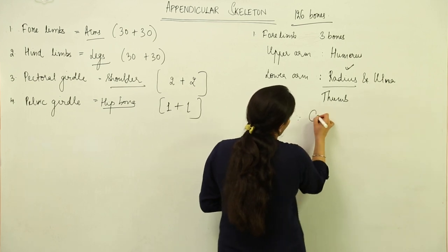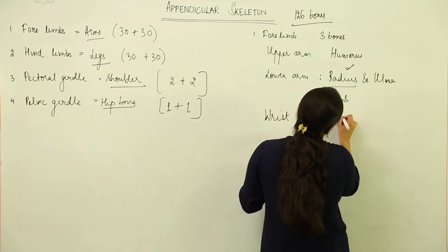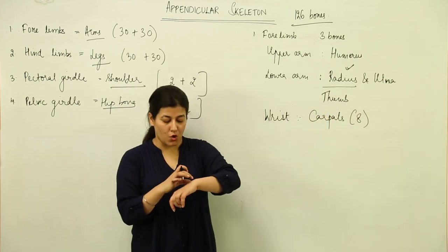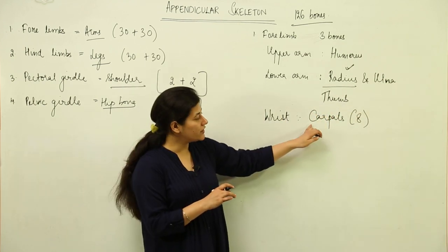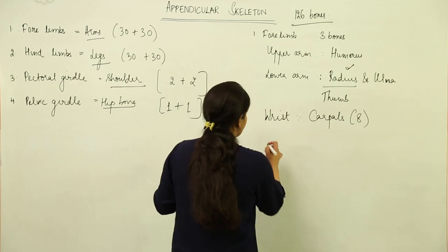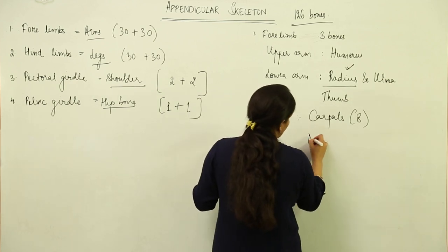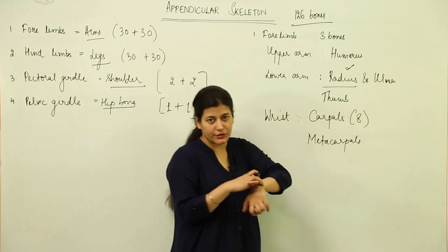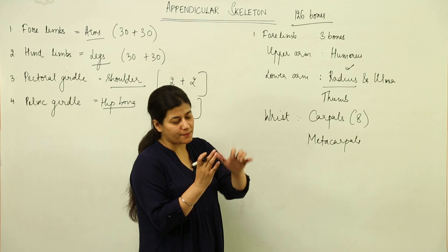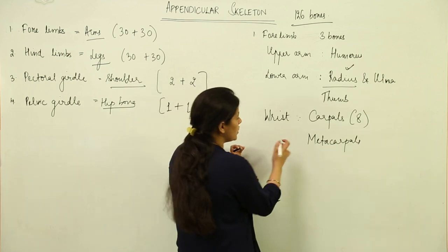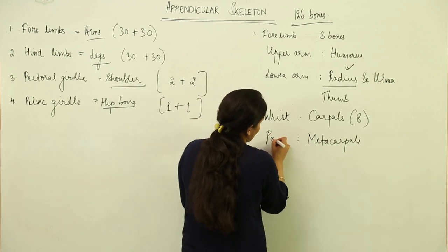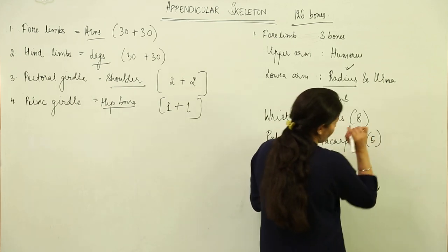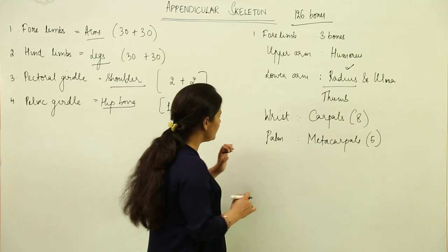The wrist contains carpals — eight small bones in total. Moving from the wrist into the hand, the palm is formed by metacarpals, which number five bones.